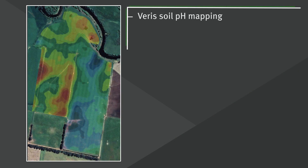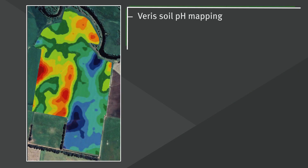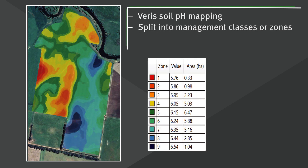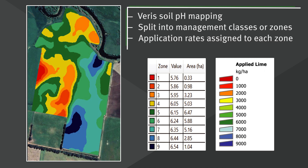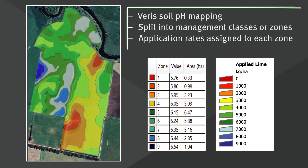The Wishaws use Veris soil pH mapping to map pH variability across their fields. Based on the soil pH map, fields are split into management classes or zones. Lime application rates are assigned to each zone to form a prescription map, and the VR controller adjusts production output according to the rate for each zone.